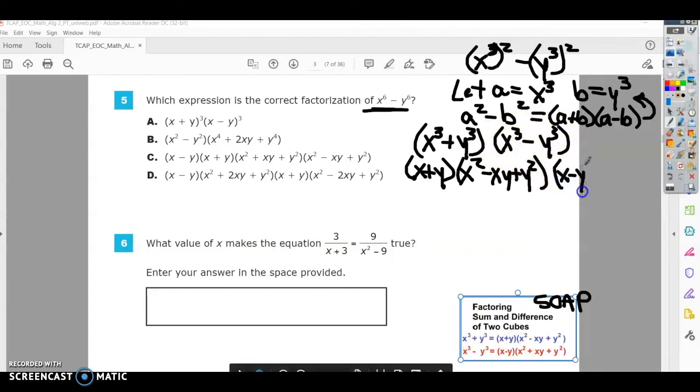So it's going to be the second one. So it's going to be x minus y. And same thing, we're going to have, this was the same sign, opposite sign, always positive. So x squared plus xy plus y squared. If you can read my writing there.